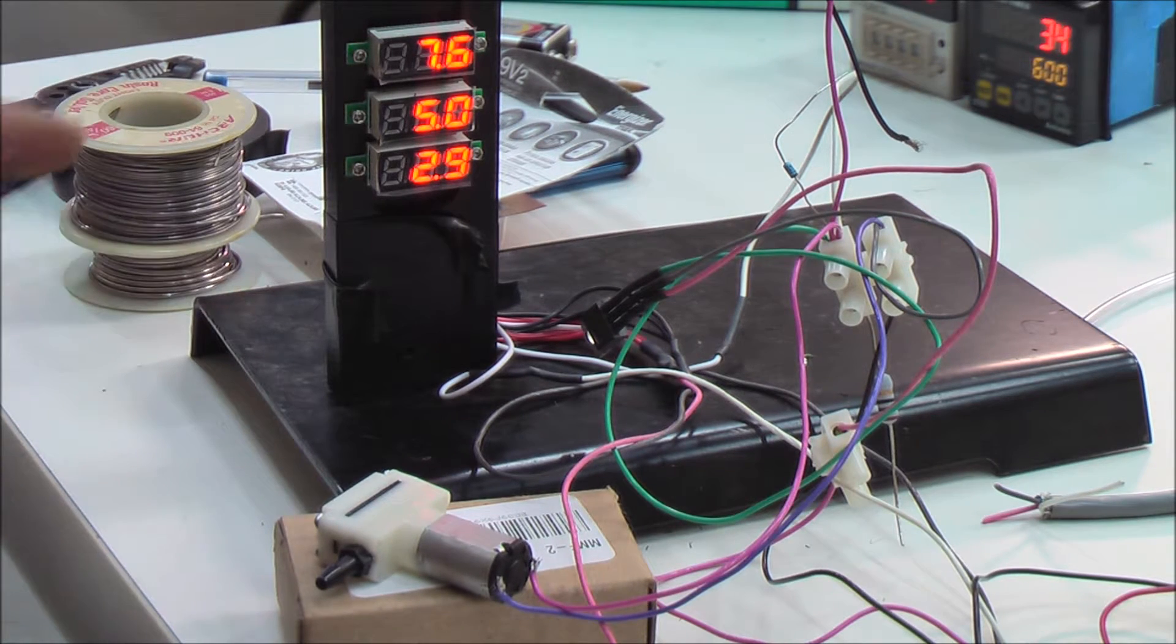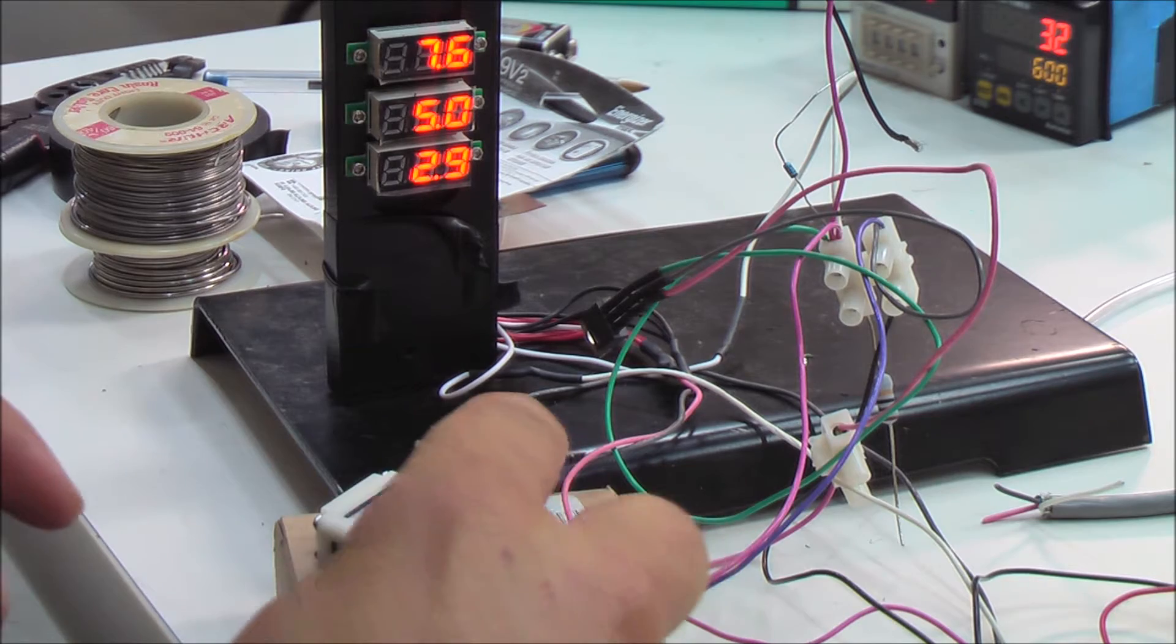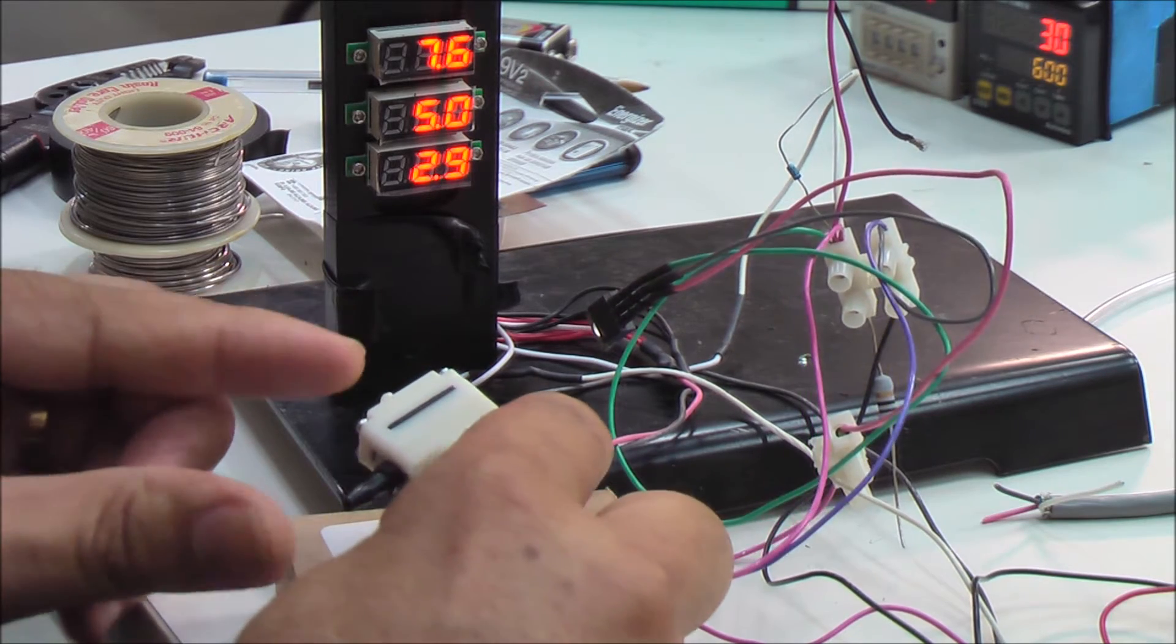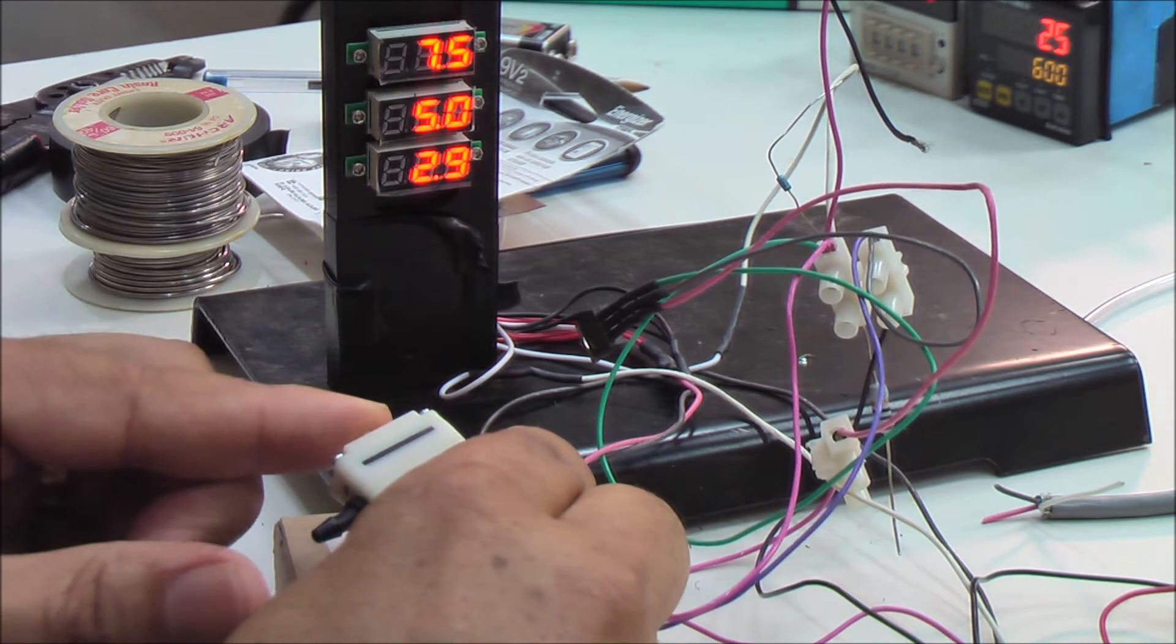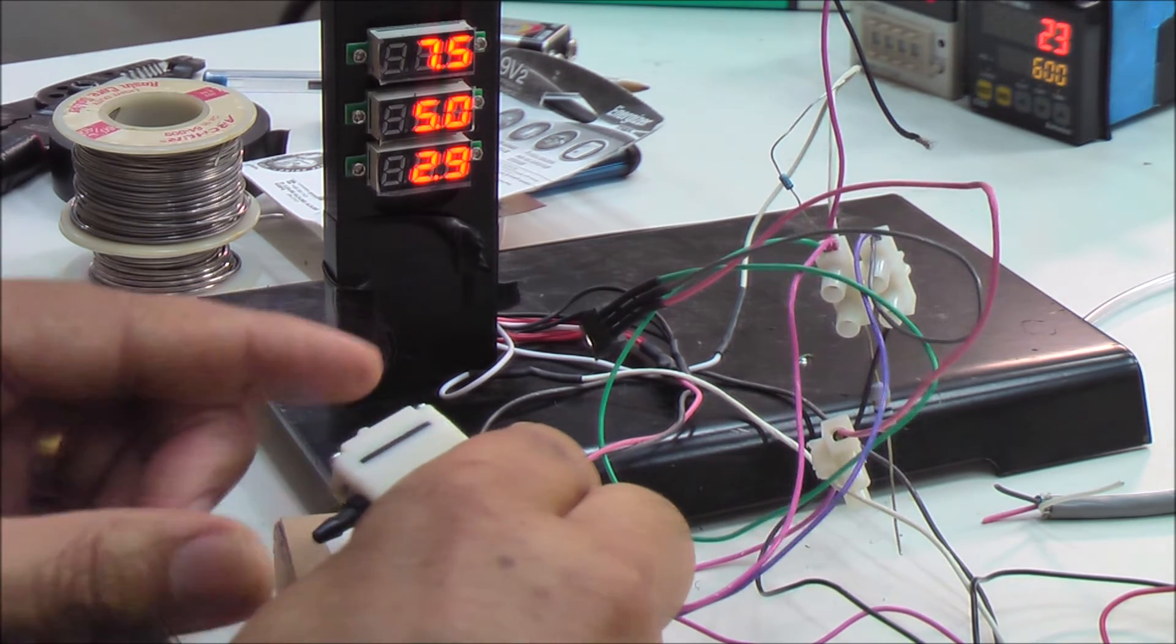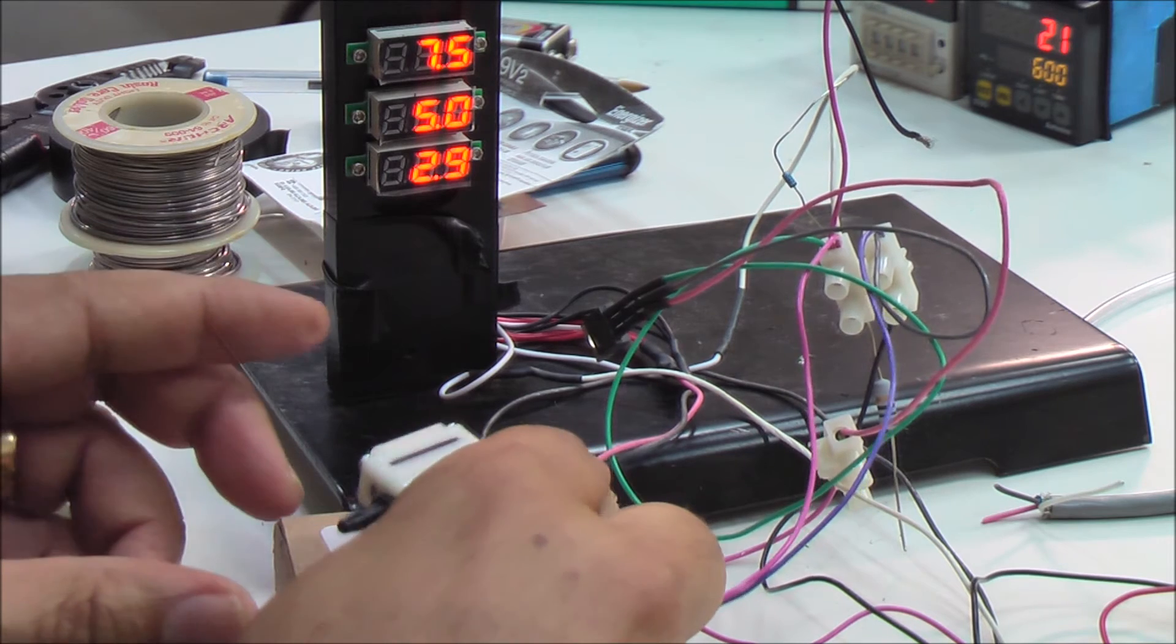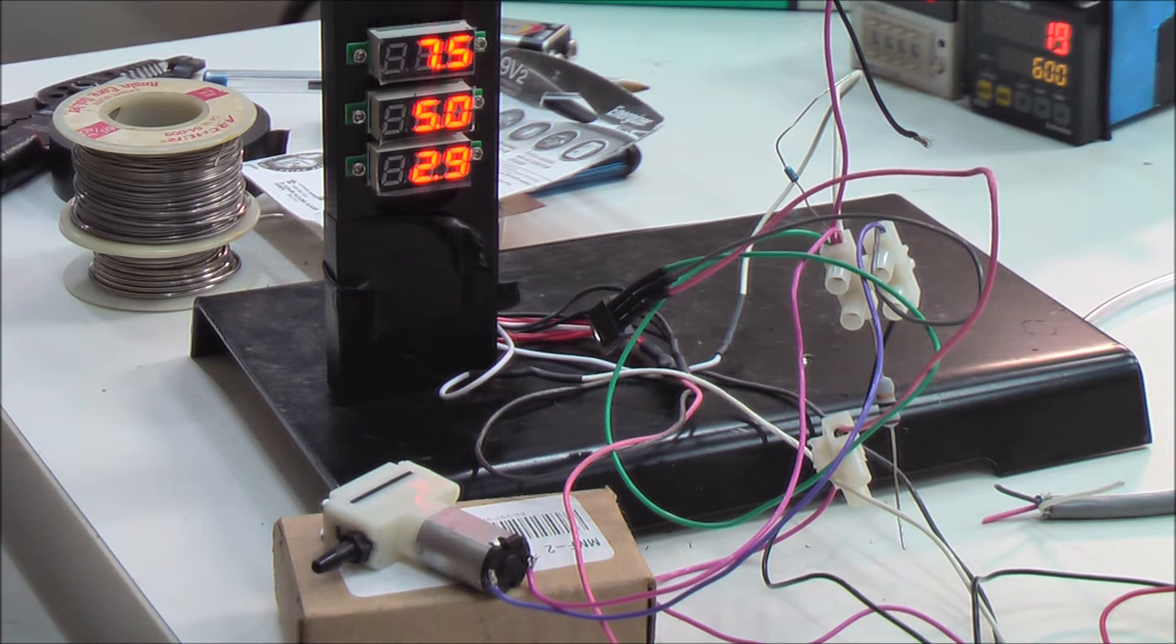See, the voltage regulator is holding the voltage at 2.9, it's a 3-volt regulator. When we add any load to the pump, the voltage does not change, so that's one level of stability in the system that we don't have to worry about.